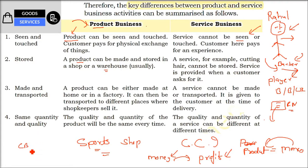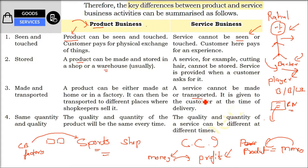Products are made and transported. For example, a cricket bat or ball is made in a factory, then transported through certain channels, and finally arrives at the retail sports shop. In service, it cannot be transported — you cannot transport the service of a barber. If you want that service, you have to go to the barber, or he may come to you. Similarly, you go to tuition to teach yourself.